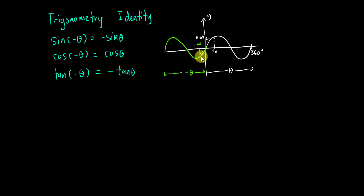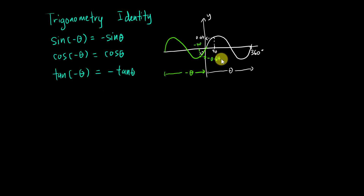You can see both sides of the graph are symmetric — inverse symmetry — so you should be able to guess that the value at negative 40 will basically be negative 0.64. If you don't believe me, type sine negative 40 in your calculator and you will get that value.